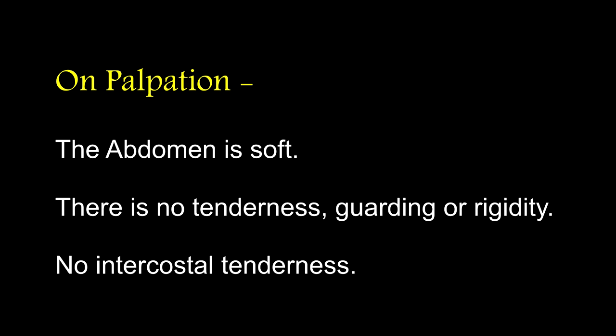On palpation, the abdomen is soft. There is no tenderness, guarding or rigidity. No intercostal tenderness. How does a normal abdomen feel? It is soft and elastic. If there is guarding or rigidity, then it becomes firm due to muscle spasm. How do you look for guarding? By superficial palpation, pressing the abdominal wall gently, just 1 to 1.5 cm, and palpating all over the abdomen to identify the muscle tone.